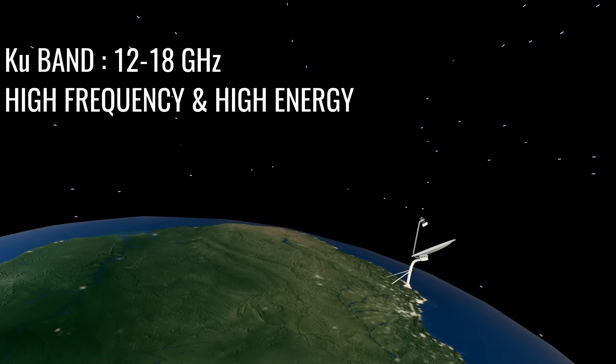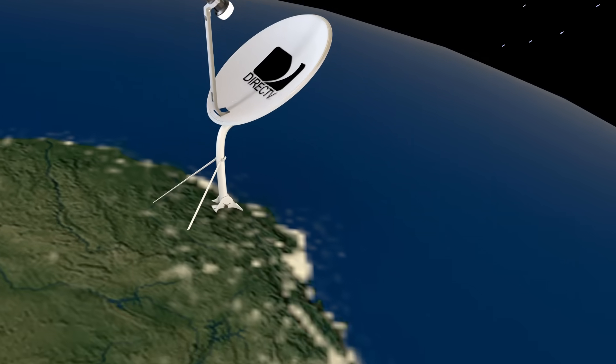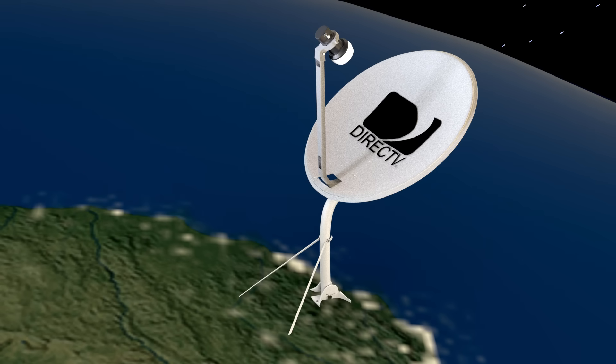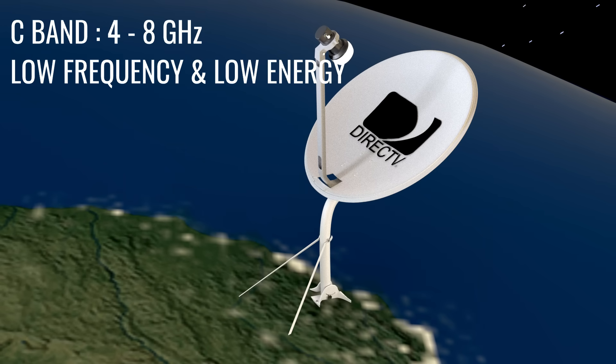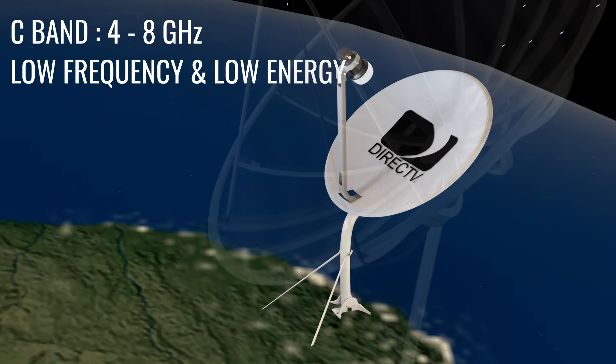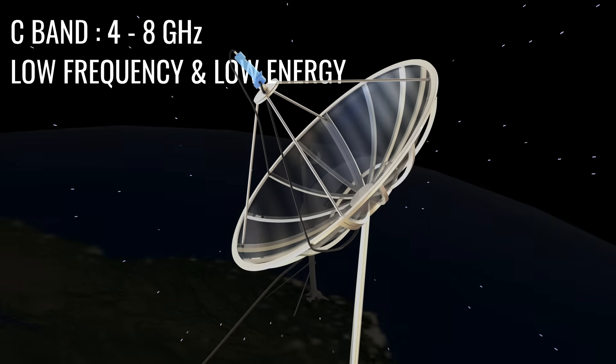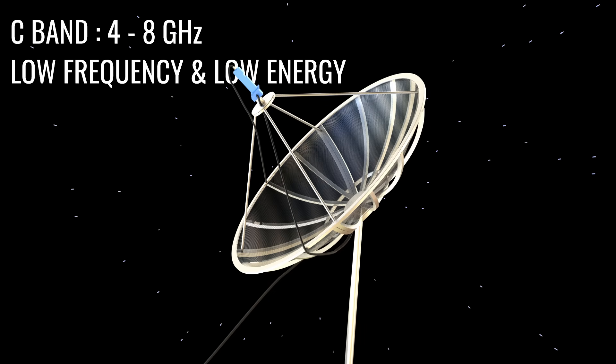These KU band signals have good power, which allows a smaller size receiver antenna. In the past, C band signals, which have lower energy, were used for television communications, and that's why huge antennas were used in those earlier days.